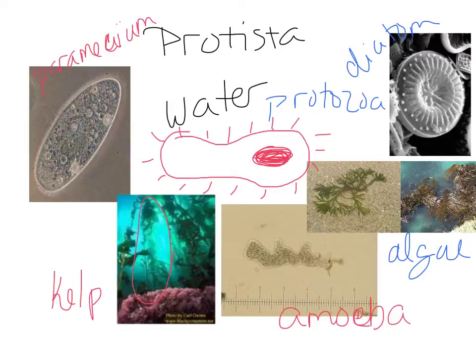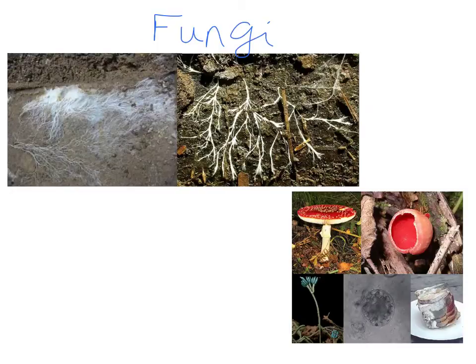Nothing really definitive to pin down in this kingdom. Lots of different examples, so file away those examples. If an organism lives in water, is unicellular, and is eukaryotic, you're going to want to think Protista.